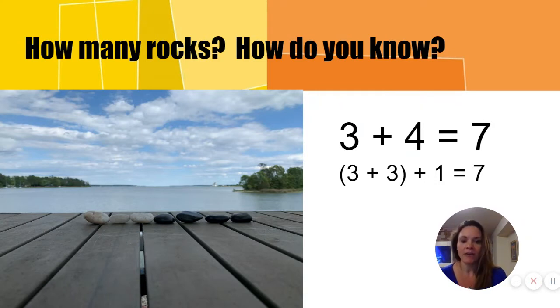We can think about taking our four here, the four black rocks, and splitting them into two groups. One has three in it and the other has one. We can add our doubles, three plus three, which we knew from the previous problem, and easily get six, and then we count on one more to get seven. This is called a near double.